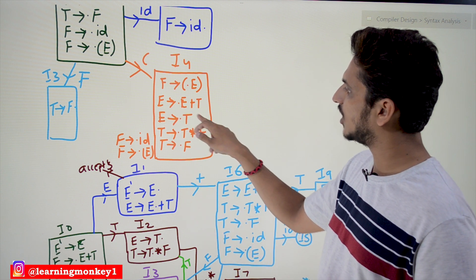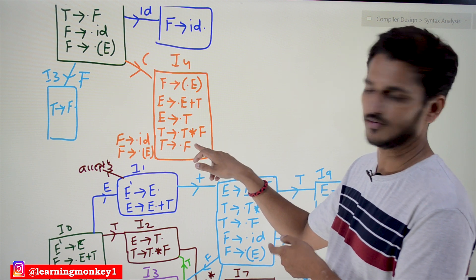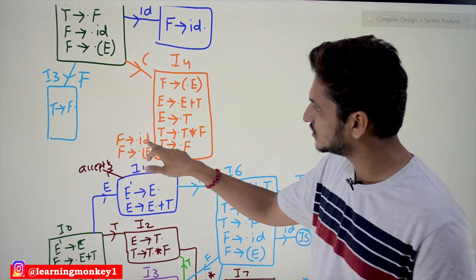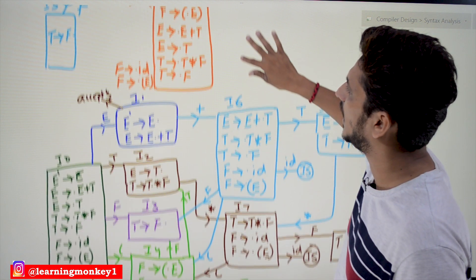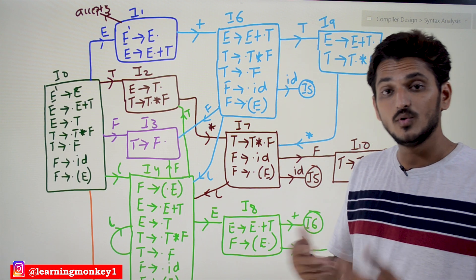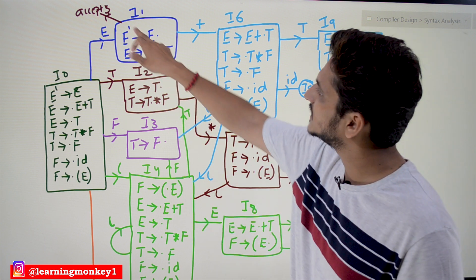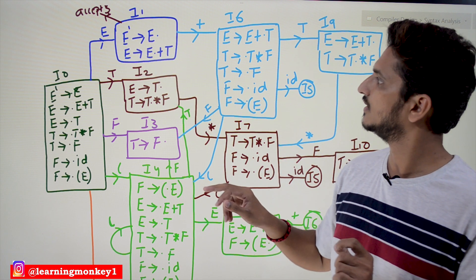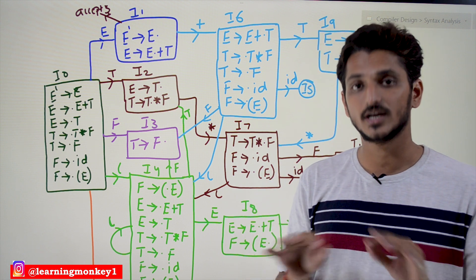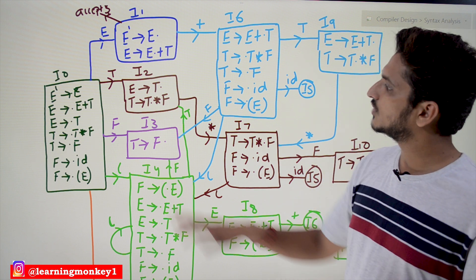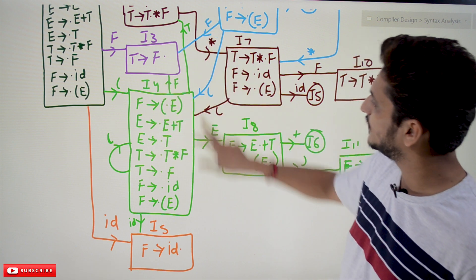Moving one step on open bracket is an important point. After reading the open bracket, the dot is now before E in F → (•E). Whenever dot is before a non-terminal, we add closure. So we add E → •E + T, E → •T; dot before T so add T → •T * F, T → •F; dot before F so add F → •id and F → •( E ). Due to space, these are written alongside. This gives state I₄. We continue until all productions are completed — dot at the end means production is complete; dot in the middle means incomplete.